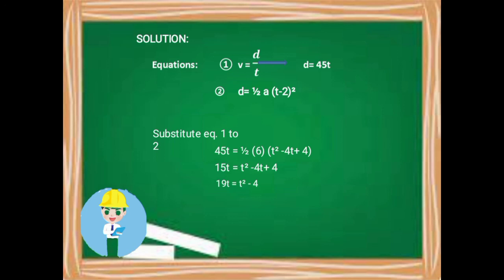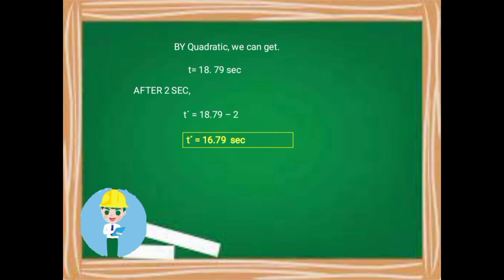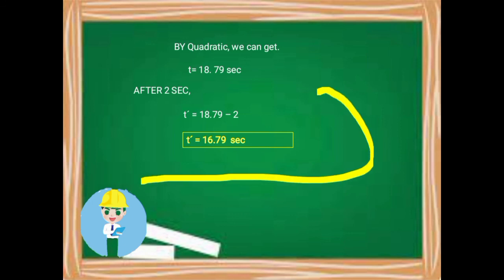Rearranging: T² − 19T + 4 = 0. Solving by the quadratic equation, we get T = 18.79 seconds. However, since the problem states the second automobile left 2 seconds later, we subtract 2 seconds: 18.79 − 2 = 16.79 seconds. This is our final answer — the second automobile overtakes the first after 16.79 seconds.